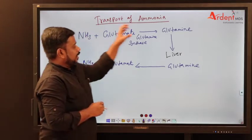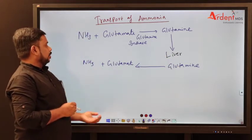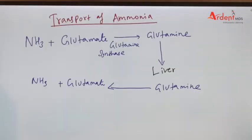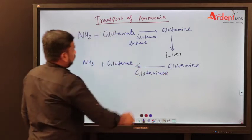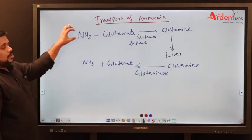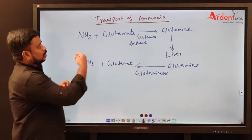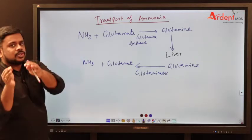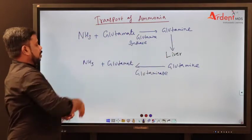This glutamine goes to the liver, and once it reaches the liver, glutamine will be converted back into glutamate and ammonia. The enzyme which helps for the conversion of glutamine to glutamate is called glutaminase. So for transport, ammonia takes glutamate as a transporter and becomes glutamine. Glutamine is a non-toxic molecule which is transported from various organs through blood and finally goes to the liver, where it is converted back into glutamate and ammonia.